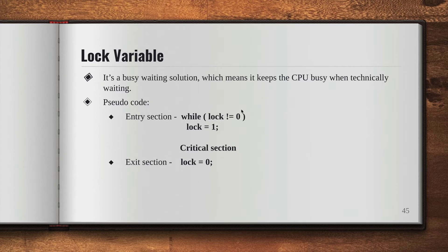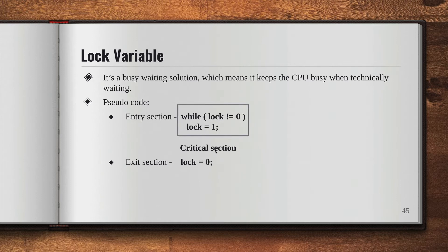When the first process comes in, the lock value is zero, so the condition 'lock not equal to zero' is false. It comes out of the while loop and moves to the next statement, which sets the lock value to one. Once it sets the lock value to one, it goes to the critical section and begins executing.